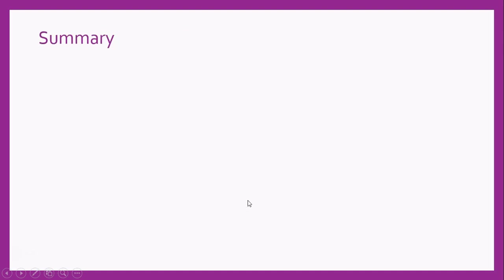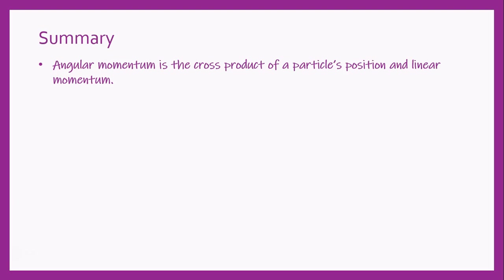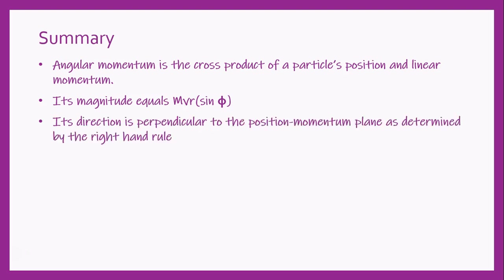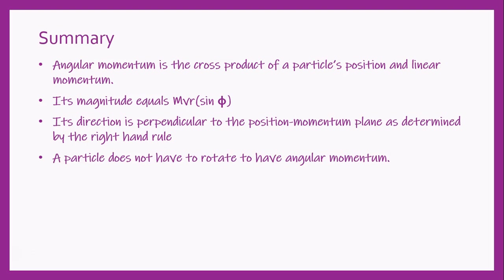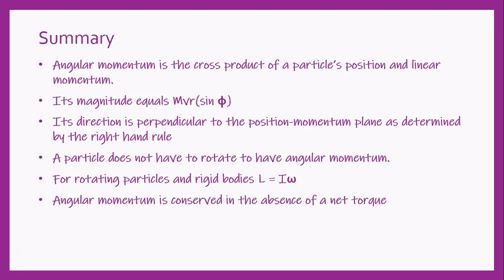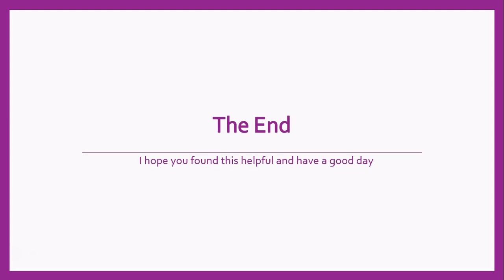Let's summarize what we've learned. Angular momentum is a cross product of the particle's position and linear momentum vectors. Its magnitude equals mass times velocity times distance from the origin times sine of phi, where phi is the angle between the position vector and the momentum vector. Its direction is perpendicular to the position-momentum plane, as determined by the right-hand rule. A particle does not have to rotate to have angular momentum. For rotating particles and rigid bodies, angular momentum equals rotational inertia times angular velocity. And finally, angular momentum is conserved in the absence of a net torque.